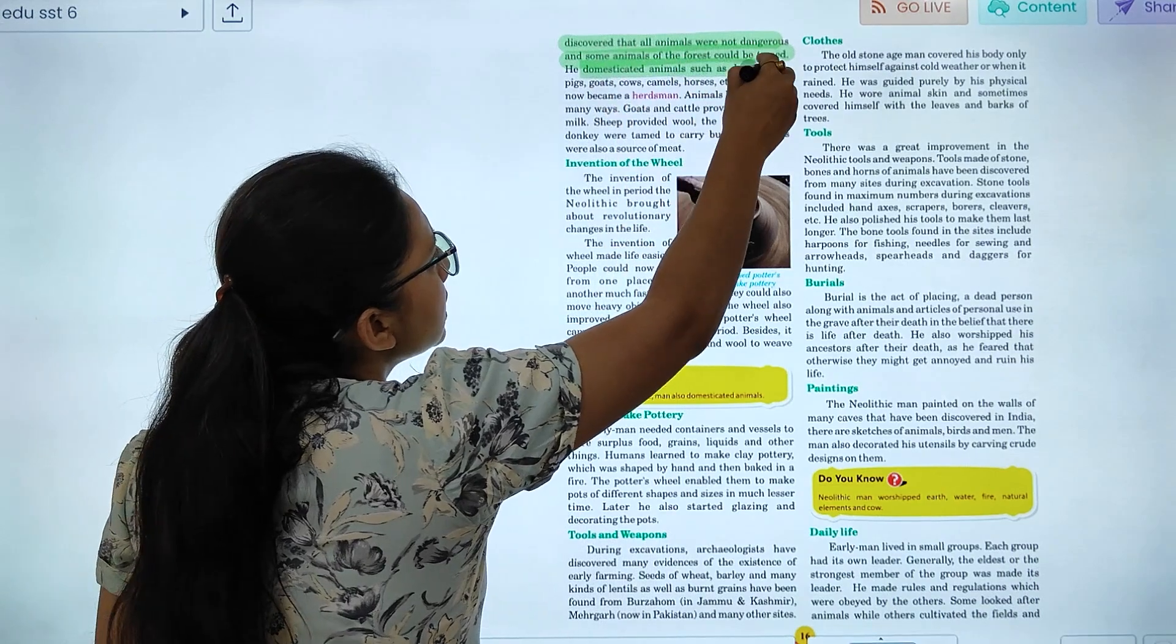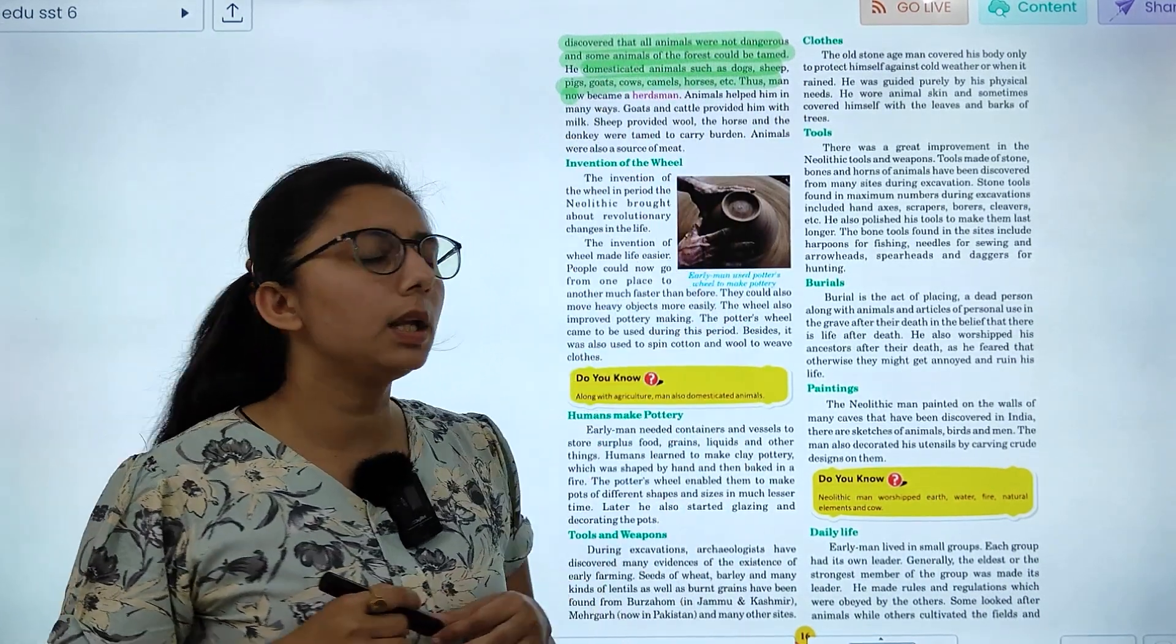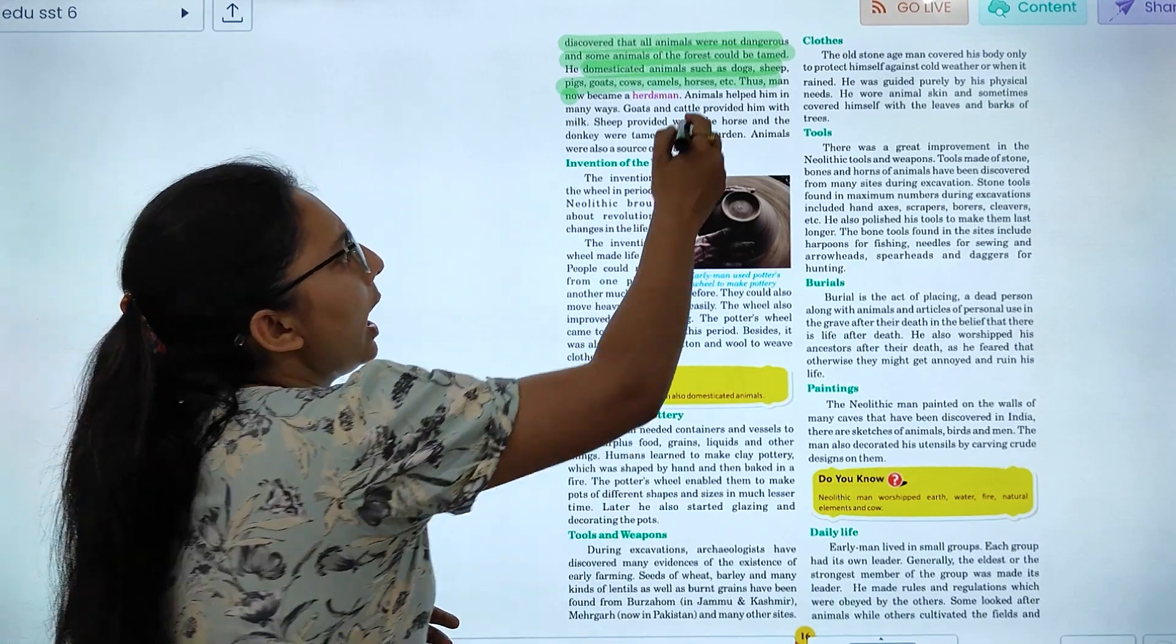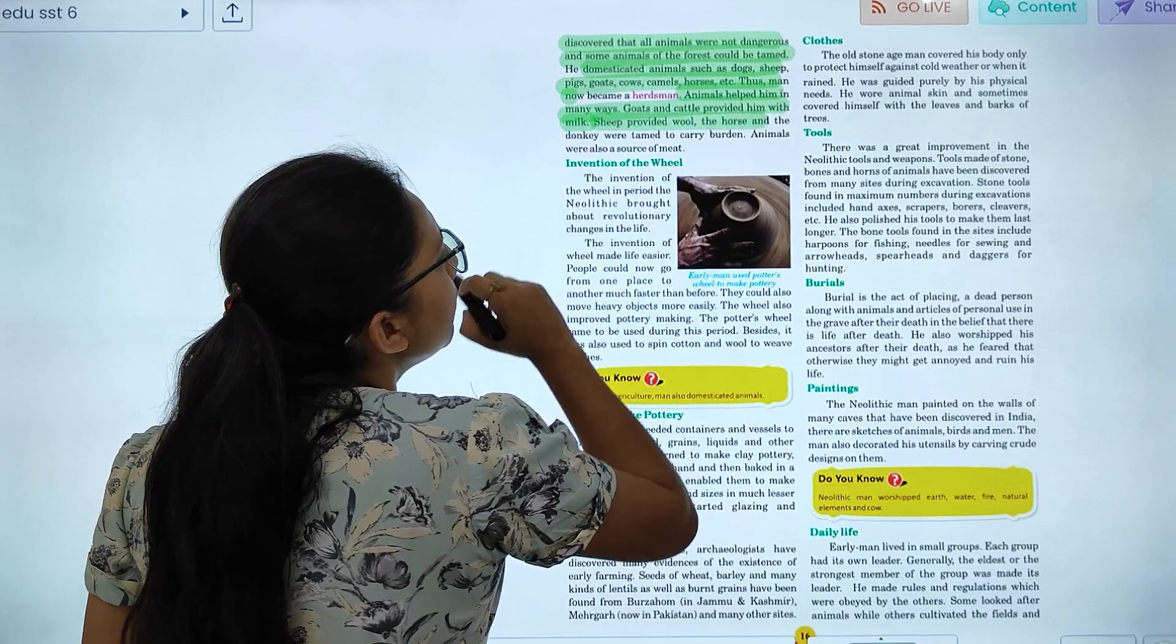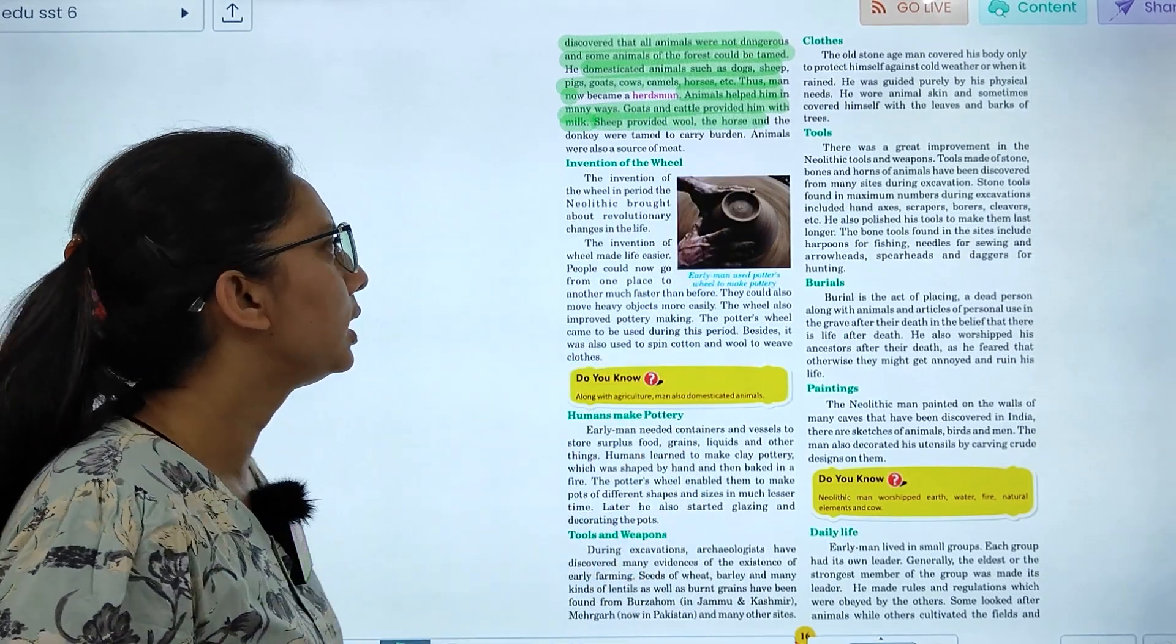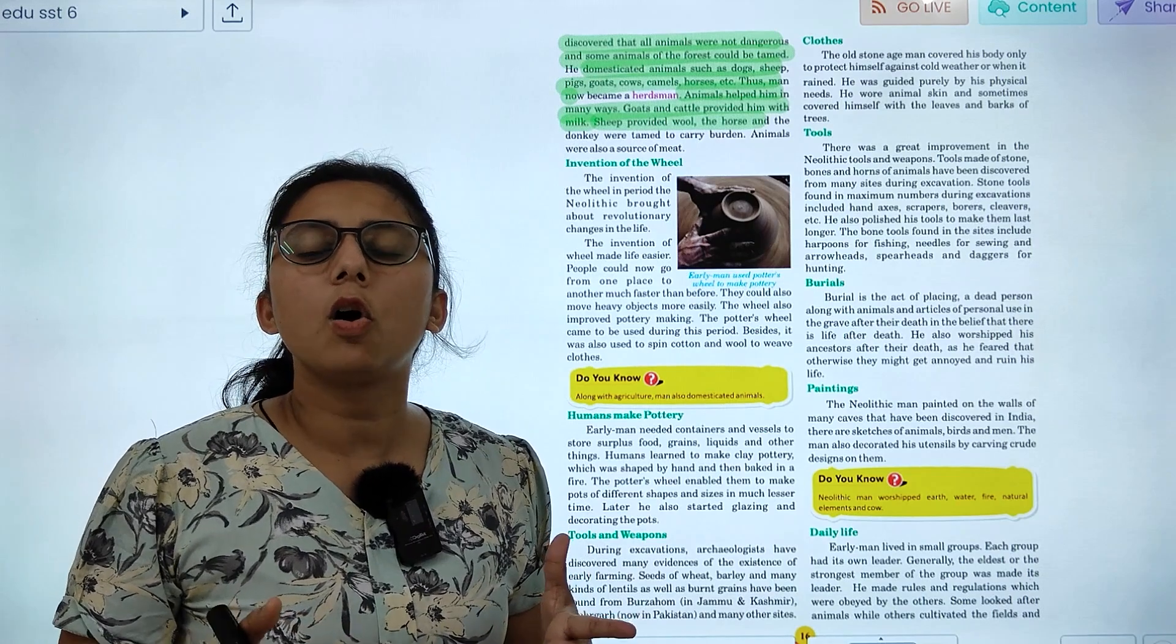Domesticated animals such as dogs, sheep, pigs, bulls, cattle, and horses. They became herdsmen and farmers. Animals helped in many ways. Goats and cattle provided them with milk. Sheep provided them with wool. Horse and donkey they tamed. Dogs, donkey or horses.